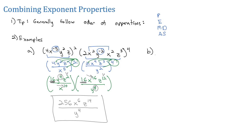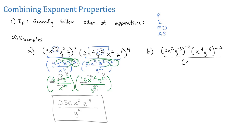Let's do one more example. Let's try 2x squared, y to the negative 3, all to the negative 4 power, times x to the 4th, y to the negative 6th, all to the negative 2nd power, all over x to the negative 6th, y to the 4th, all squared.